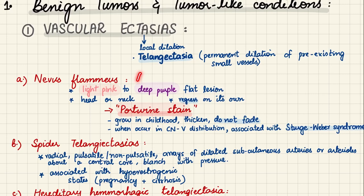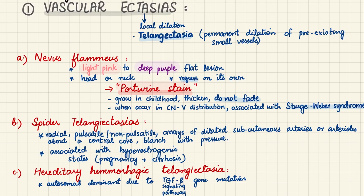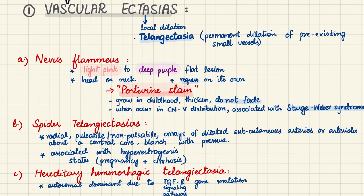Nevus flammeus lesions are usually present on the head or neck region, are light pink to deep purple in color, and are flat lesions that regress on their own. One specific type is port wine stain, so named because they resemble port wine. These stains grow and thicken in childhood but do not fade, unlike typical nevus flammeus.